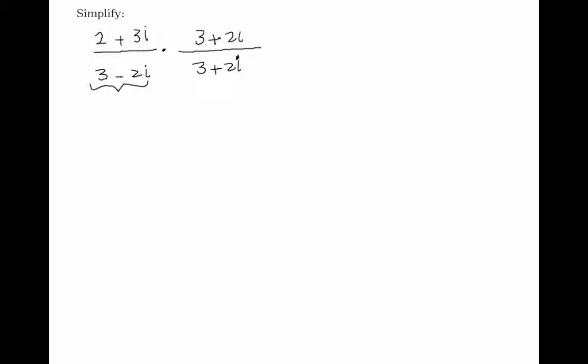The reason we're doing this is because if I have a minus b, if I multiply by the conjugate a plus b, that's the difference of squares, so this would be equal to a squared minus b squared.